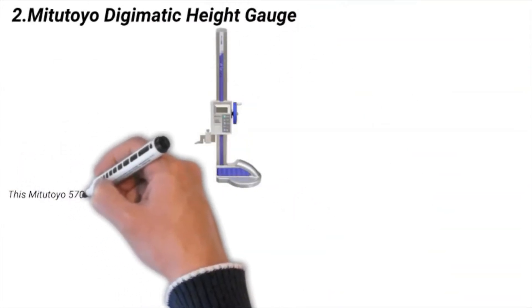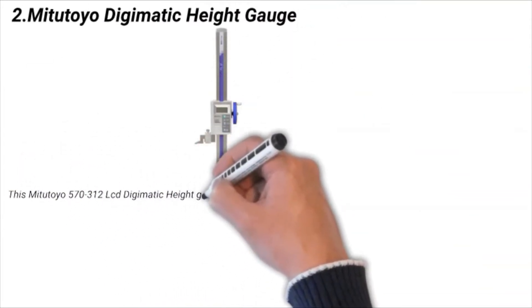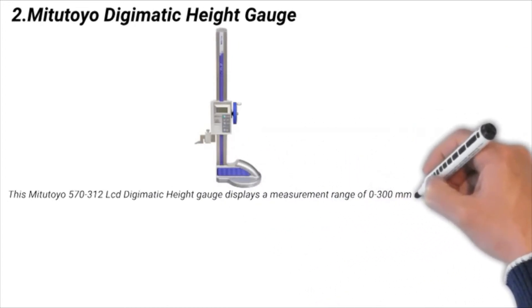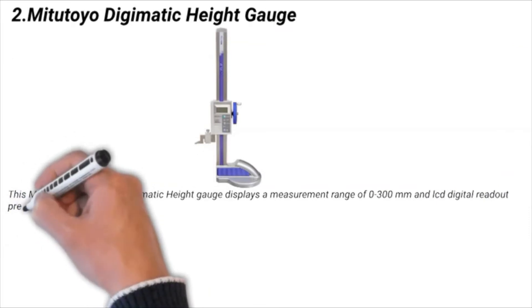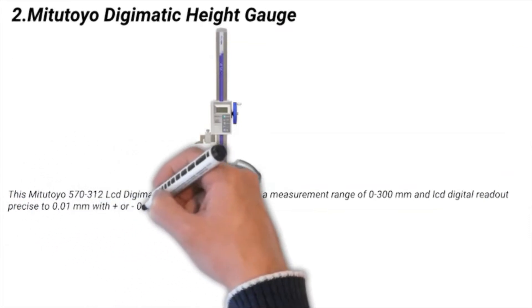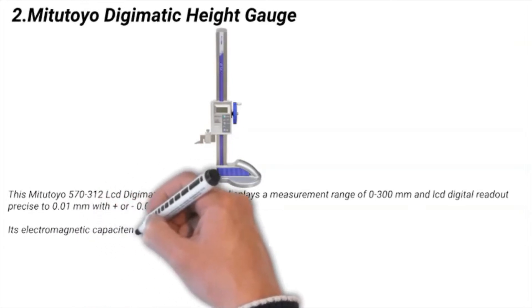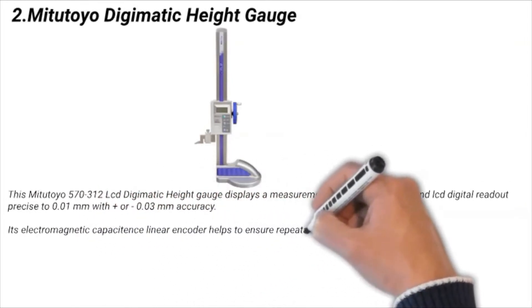Number two: Mitutoyo Digimatic Height Gauge. This Mitutoyo 570-312 LCD Digimatic height gauge displays a measurement range of 0 to 300mm with LCD digital readout precise to 0.01mm with plus minus 0.03mm accuracy. Its electromagnetic capacitance linear encoder helps to ensure repeatability.